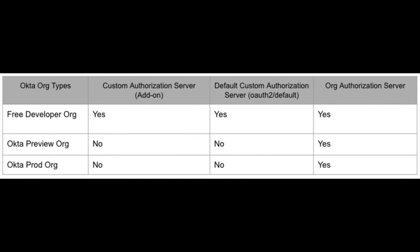This table shows all the available OktaOrgs within Okta: the Free Developer Org, OktaPreview, and OktaProdOrg. The Free Developer Org includes all the different authorization servers, but the custom and default authorization servers are not included in OktaPreview and ProdOrgs. Be sure to reach out to your account manager for more info on pricing for the API access management feature, especially if your use case requires access tokens or OAuth 2.0.